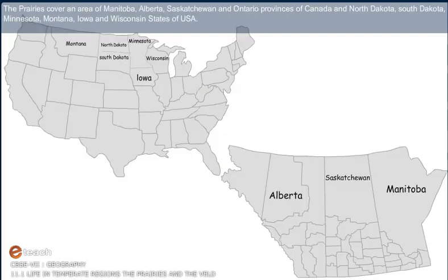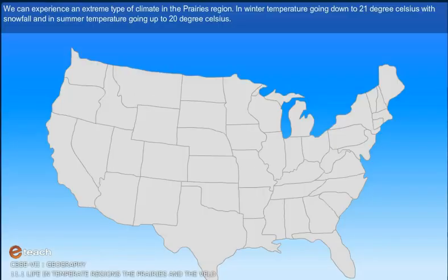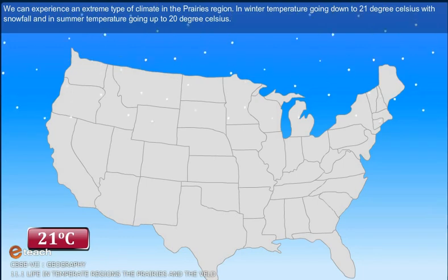The prairies cover an area of Manitoba, Alberta, Saskatchewan, and Ontario provinces of Canada, and North Dakota, South Dakota, Minnesota, Montana, Iowa, and Wisconsin states of the USA. We can experience an extreme type of climate in the prairies region.